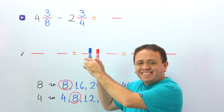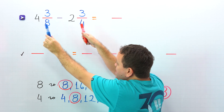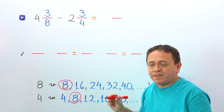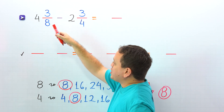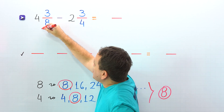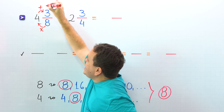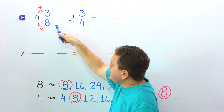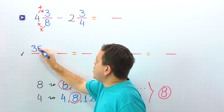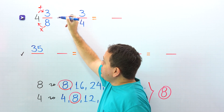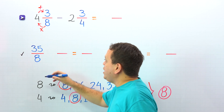In cases like this, we need to follow a different procedure. The strategy is: first, we will convert both mixed numbers to improper fractions, and then we will find the difference. Let's start with 4 and 3 eighths. To convert a mixed number to an improper fraction, we multiply the denominator by the whole number and then add this result to the numerator. 8 times 4 is 32, plus 3 gives us 35. So 4 and 3 eighths becomes 35 eighths — the denominator stays the same.